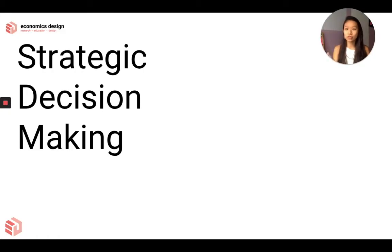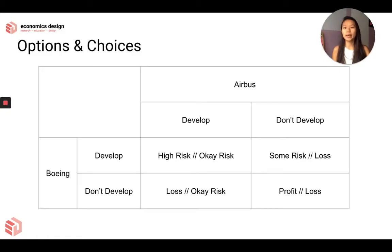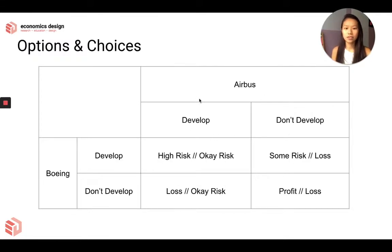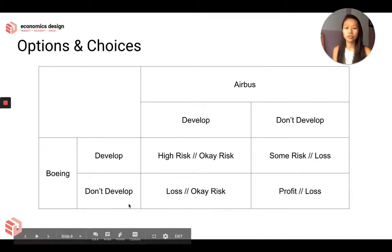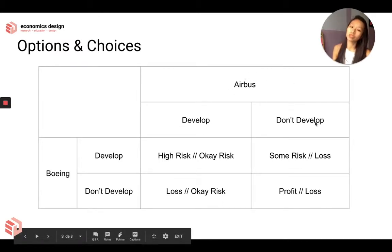Once again we're going to look at strategic decision-making. Let's look at the different options and choices available for both Boeing and Airbus. To read this, the horizontal side is Boeing — when Boeing chooses to develop or not develop. The vertical side is Airbus — Airbus chooses to develop or not develop.